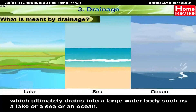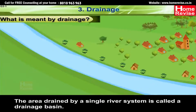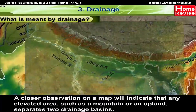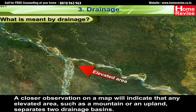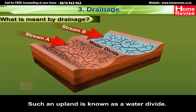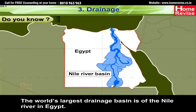The area drained by a single river system is called a drainage basin. A closer observation on a map will indicate that any elevated area such as a mountain or upland separates two drainage basins. Such an upland is known as a water divide. The world's largest drainage basin is that of the Nile River in Egypt.